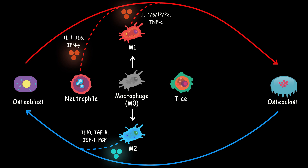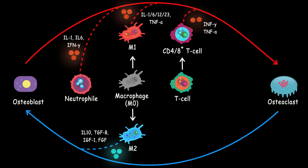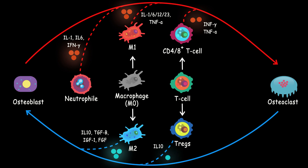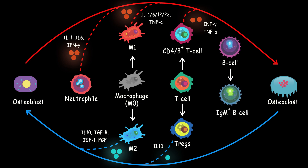T cells would differentiate into three other T cells: one is called CD4 or T helper cells, and the other is CD8 or cytotoxic T cells. Both of them release TNF-alpha and interferon-gamma, which increase the population of osteoclasts. However, the regulatory T cells or Tregs would secrete interleukin-10 and growth factors that increase osteoblasts. We can see the same effect by B cells. They can differentiate into IgM memory B cells, which increase the bone mass by producing interleukin-10 molecules.